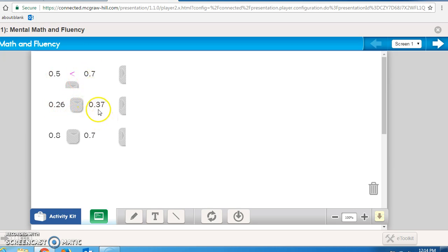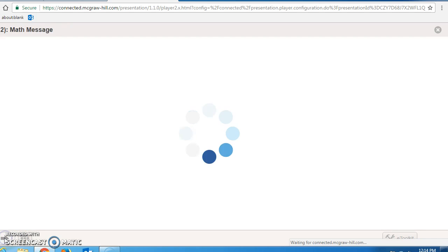26 hundredths or 37 hundredths? Again, less than. If you have 26 out of 100, that'd be like 26 cents. If you have 37 cents out of 100, that is more than 26. And again, 8 tenths versus 7 tenths. You should realize that 8 tenths is greater than 7 tenths.